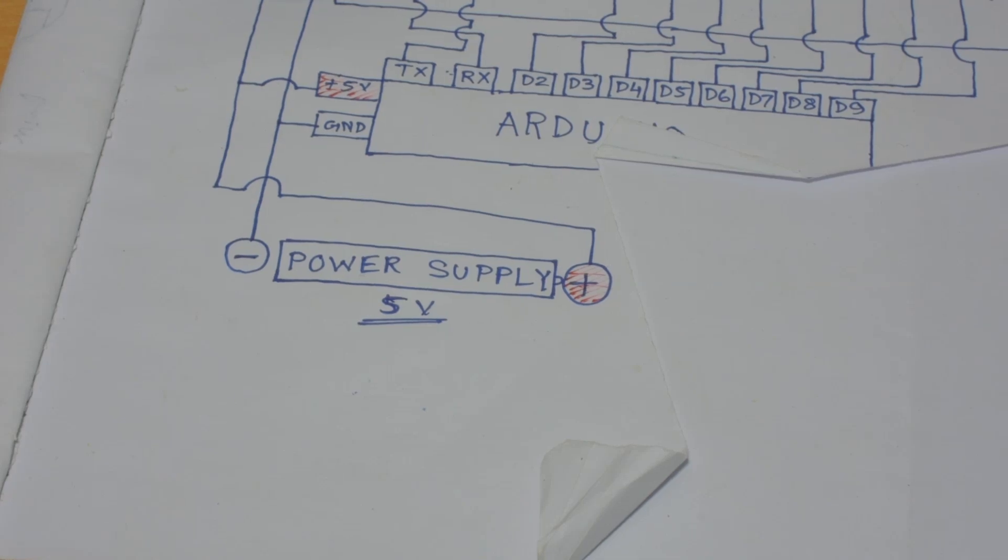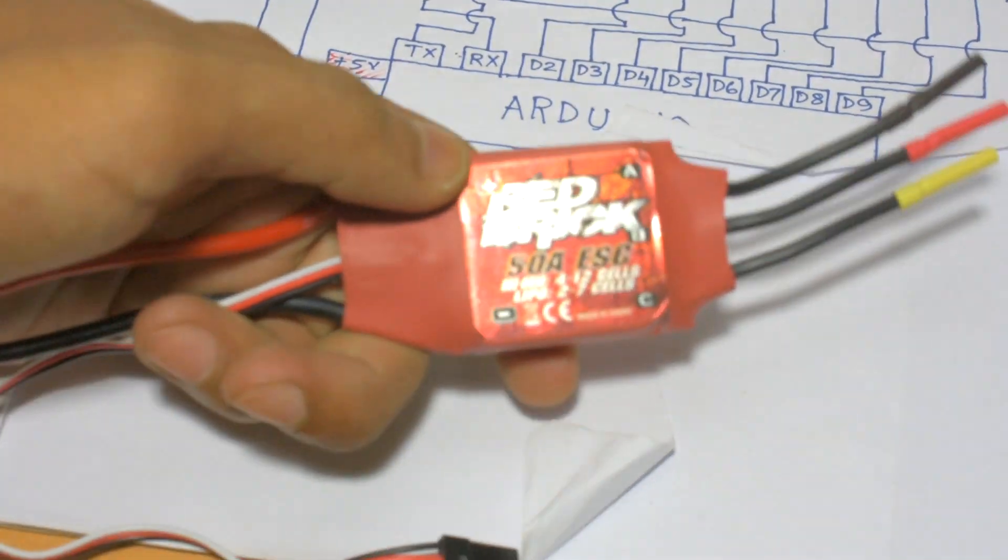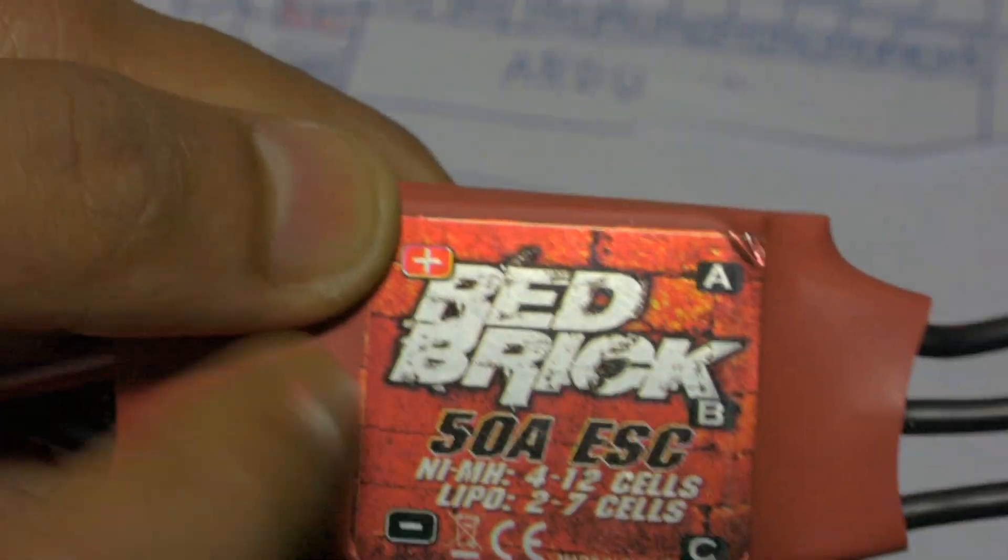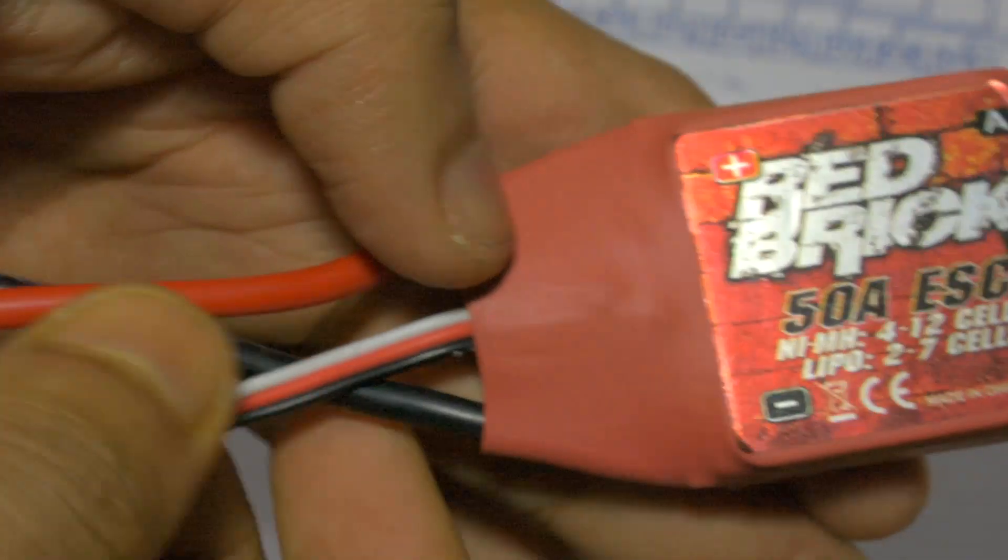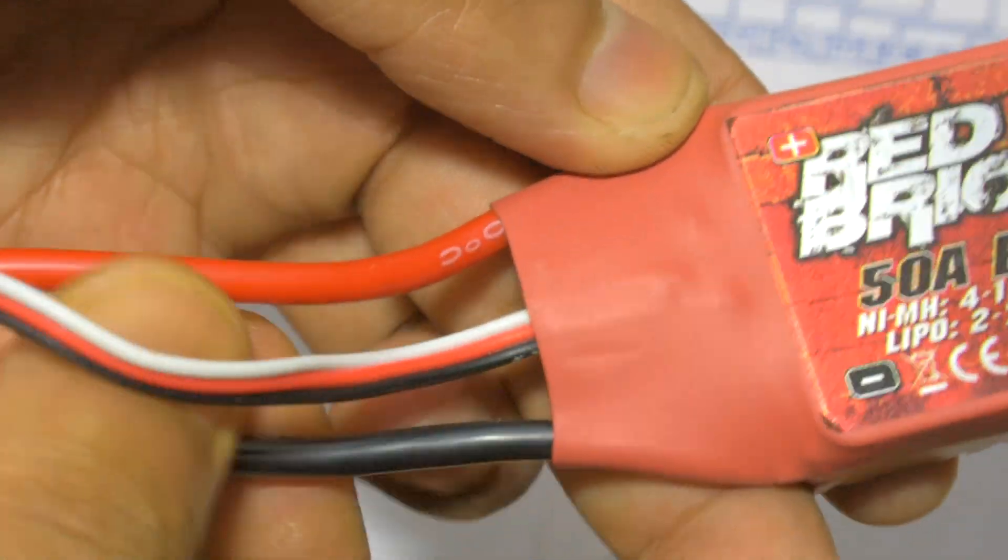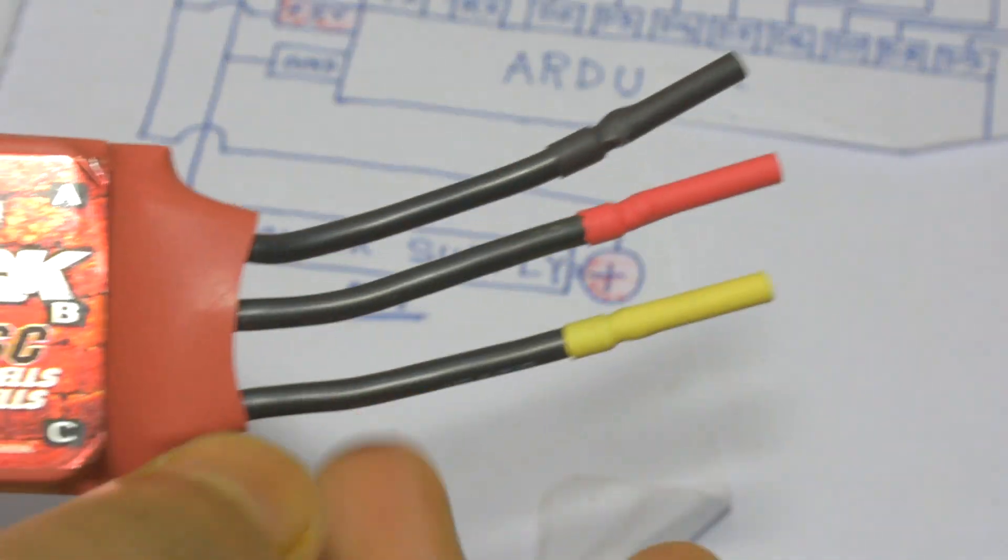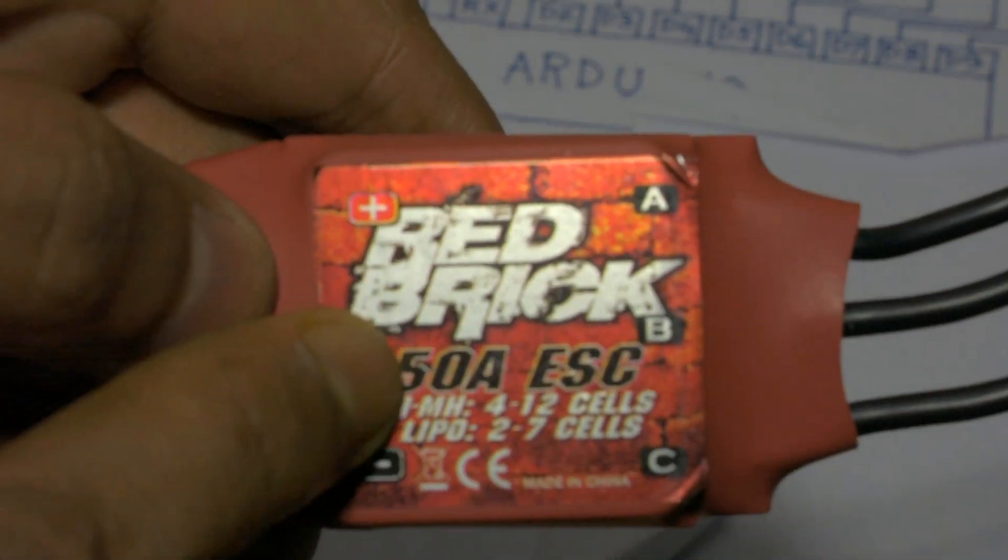Hi everyone, welcome here. Today in my hand I have this ESC from Red Brick. You can see the Red Brick branding over here. This red one is positive, this black one is negative, and these are the connecting wires for the motor: A, B, C.